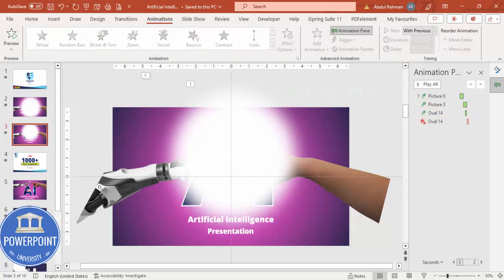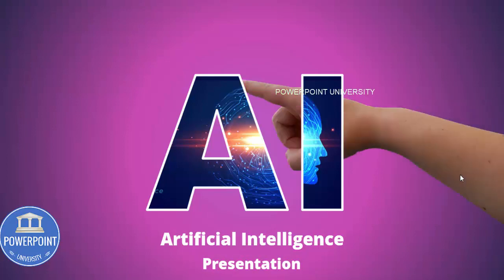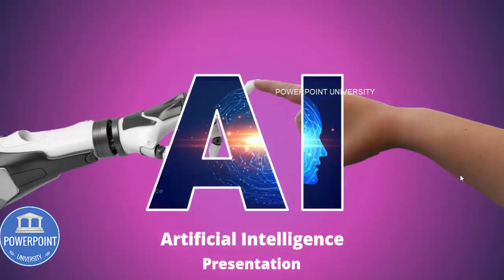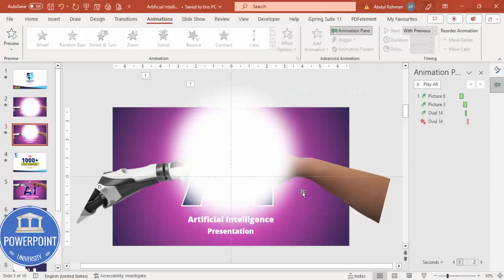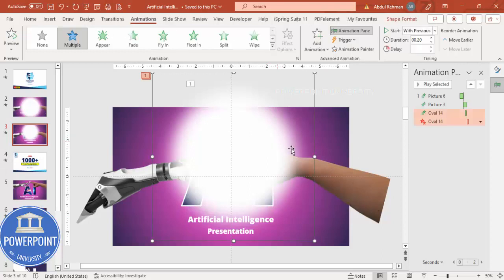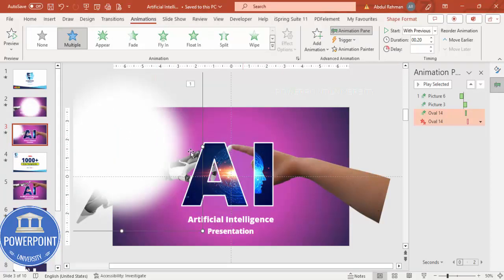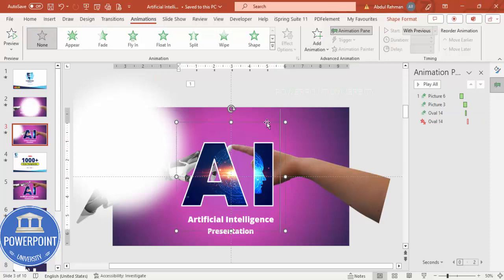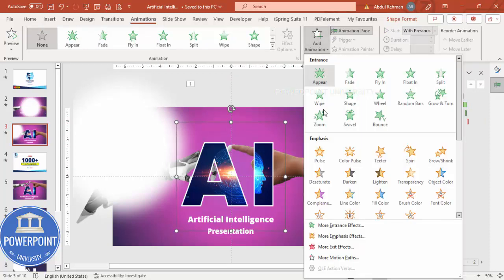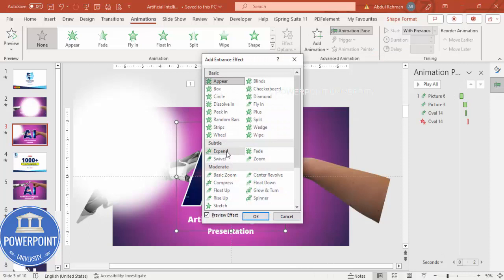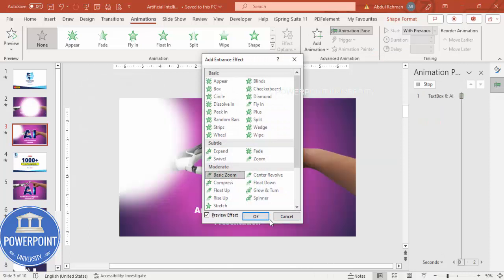Let's see how it looks now — yes, the light comes then goes immediately, that's okay. Once this is done, for the AI text: Add Animation > More Entrance Effects > Basic Zoom — click OK.